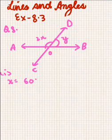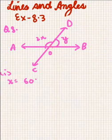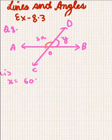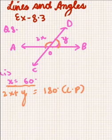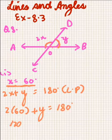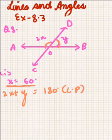In Question 8, rays AB and CD intersect at point O. We have to determine the value of y when x is 60 degrees. I am only solving the first part. This angle and this angle form a linear pair, so their measures sum to 180 degrees. Substituting x equals 60 degrees, we get 120 degrees plus y equals 180 degrees, so y equals 60 degrees.